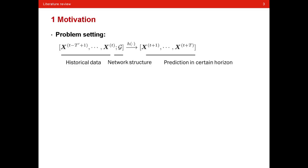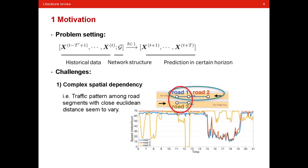Now let's begin with the motivation. The problem setting of this paper is that given historical data and network structure, we want to derive prediction in a certain horizon. For urban road network traffic prediction, there are some challenges we have to face with.